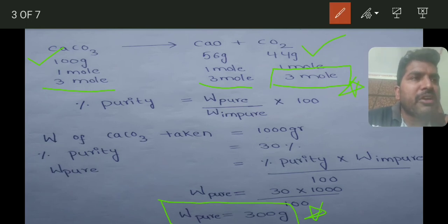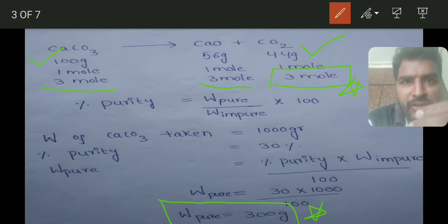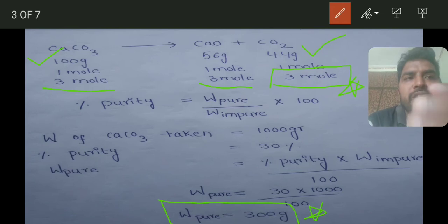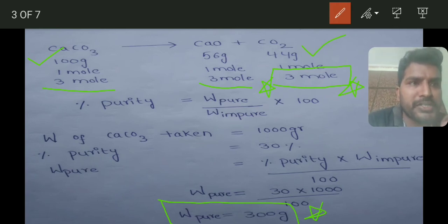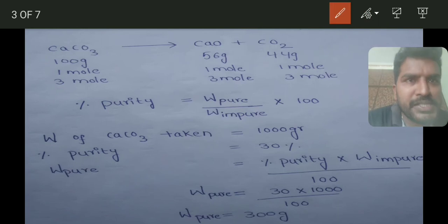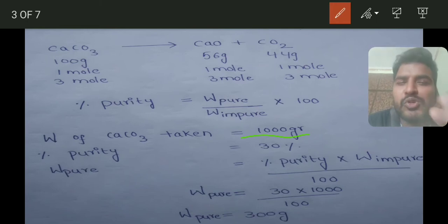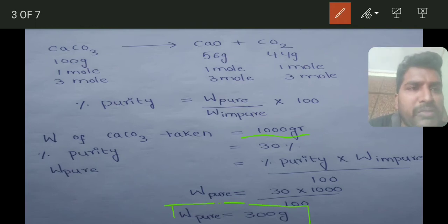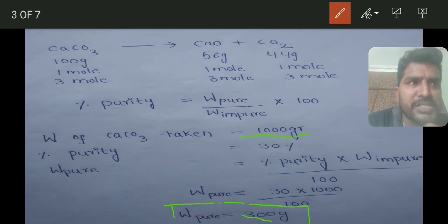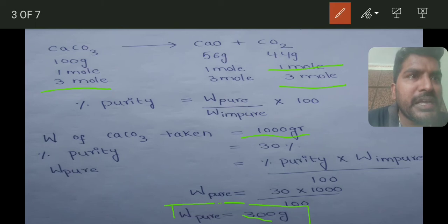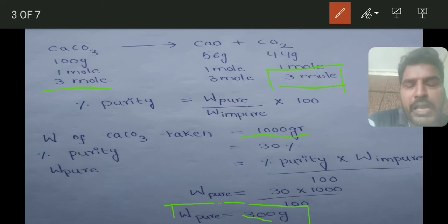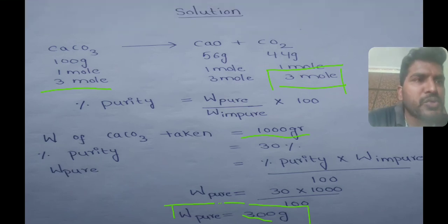So 3 moles of carbon dioxide is liberated. From the data of 1000 grams of impure substance at 30% purity, we used the percentage purity formula to identify how much pure CaCO₃ is present, and from that we identified that 3 moles of carbon dioxide is liberated.